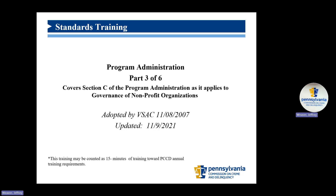Please note that there are six sections to the Program Administration Standard, which are outlined in the next slide. Recordings have been prepared for each section, and staff may listen to any or all recordings in relation to program administration. Programs who have PCCD as oversight entity will need to have policies in place to address Section C, or Governance. Following this training, the program staff contact assigned to your grant can help answer individual questions about this standard in relation to your project.